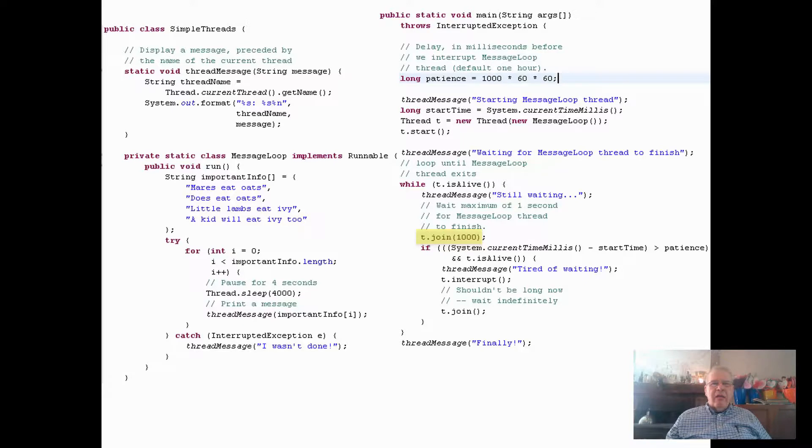Notice in the right hand column, the driver has a throws InterruptedException at the main level. As long as t is alive, the message prints out still waiting, and then we join for a thousand milliseconds. If current time millis minus start time is greater than one hour, then we're tired of waiting so we throw t.interrupt and bomb out the program.